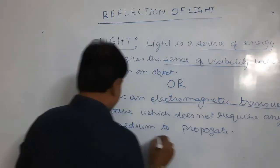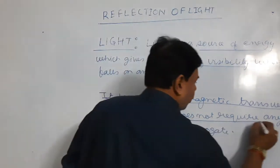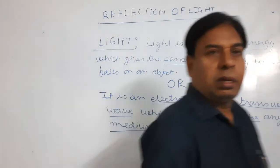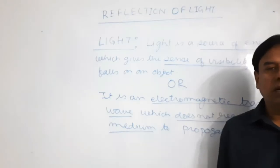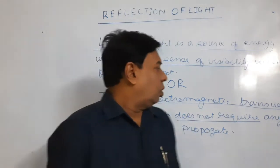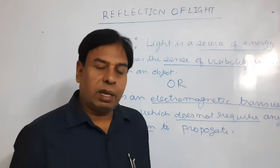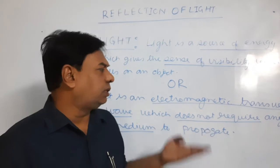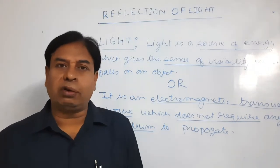An electromagnetic transverse wave is the basic fundamental property of light. It does not require any medium to propagate. These two things are very basic in nature. Since it is a transverse wave, electromagnetic waves will be dealt with in class 12, so I am just taking the basic fundamentals here.